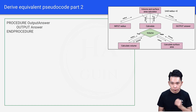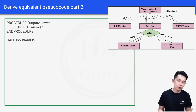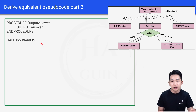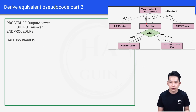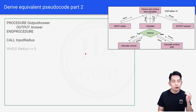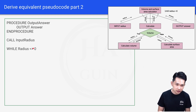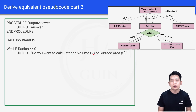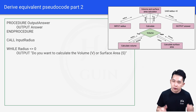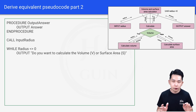Now let's start with the main program. We call inputRadius (the procedure we created in part 1). Then we have a WHILE loop: WHILE radius ≠ 0 DO. Output: 'Do you want to calculate the volume (V) or surface area (S)?' Then INPUT reply — whatever you type is stored in the variable reply.